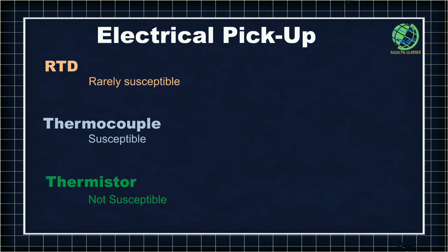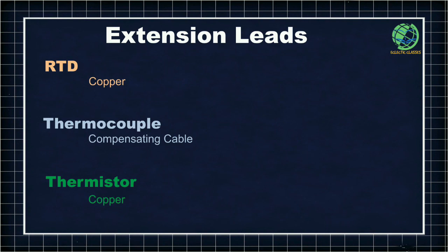When it comes to electrical pickup, RTDs are rarely susceptible to pickup of electrical noise from their surroundings. Thermocouples are susceptible to pickup of electrical noise, while thermistors are not at all susceptible to electrical pickup. In terms of extension leads, RTDs and thermistors use copper as extension leads, while thermocouples use compensating cable depending on the type of thermocouple used.